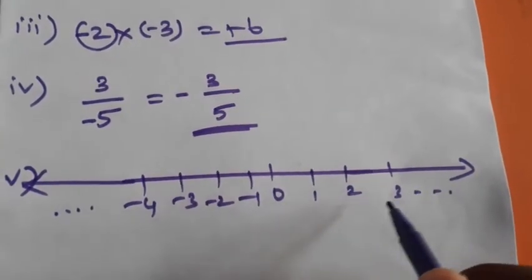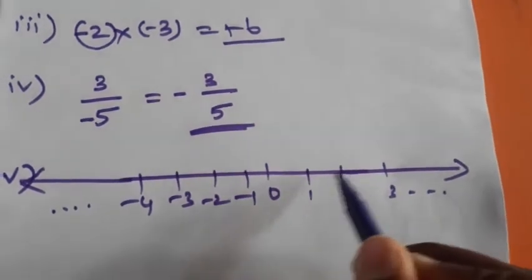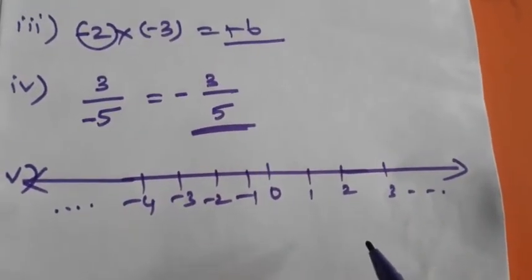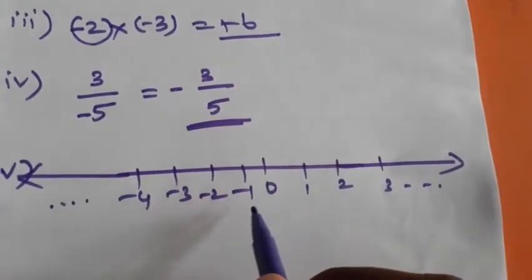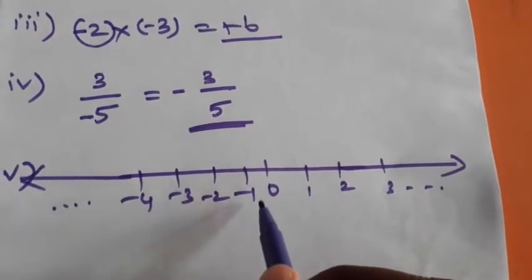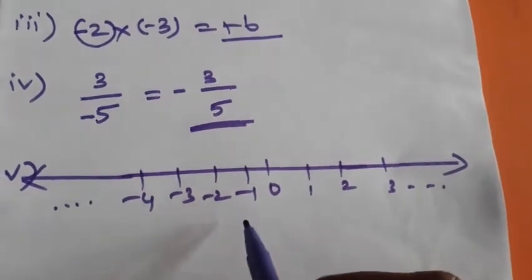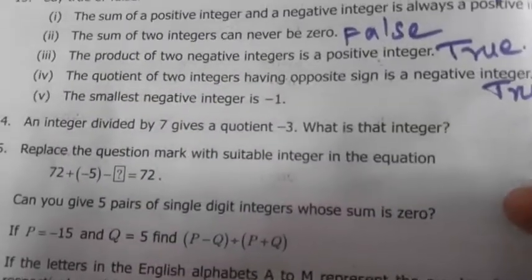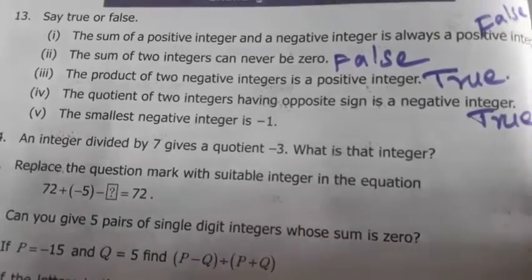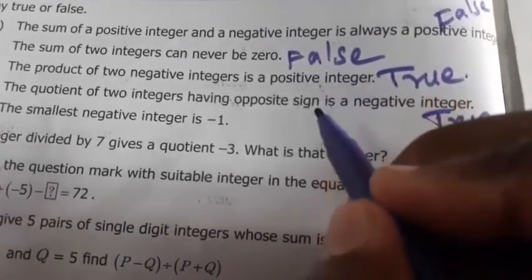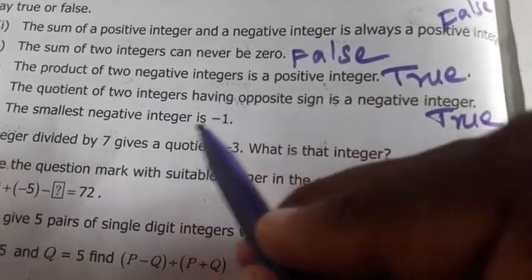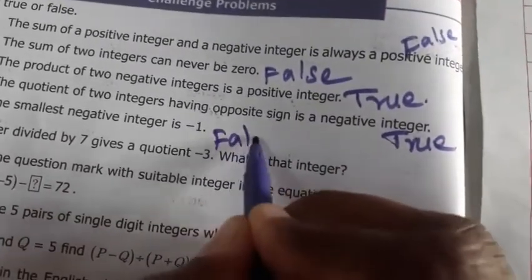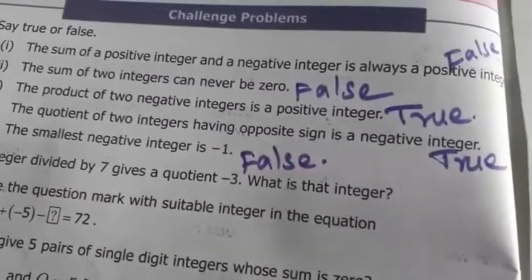The smallest positive integer is plus one. The greatest negative integer is minus one. The statement says the smallest negative integer is minus one — but minus one is actually the greatest negative integer, not the smallest. The given statement is the opposite of this, therefore the given statement is false.